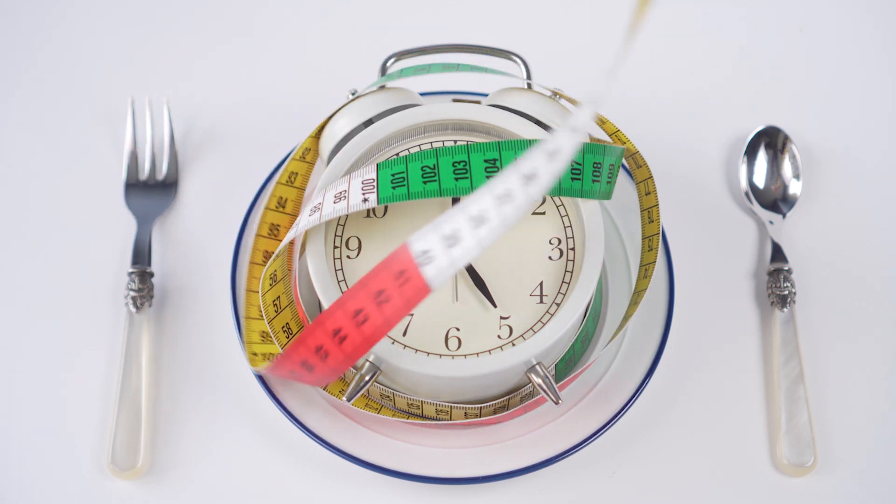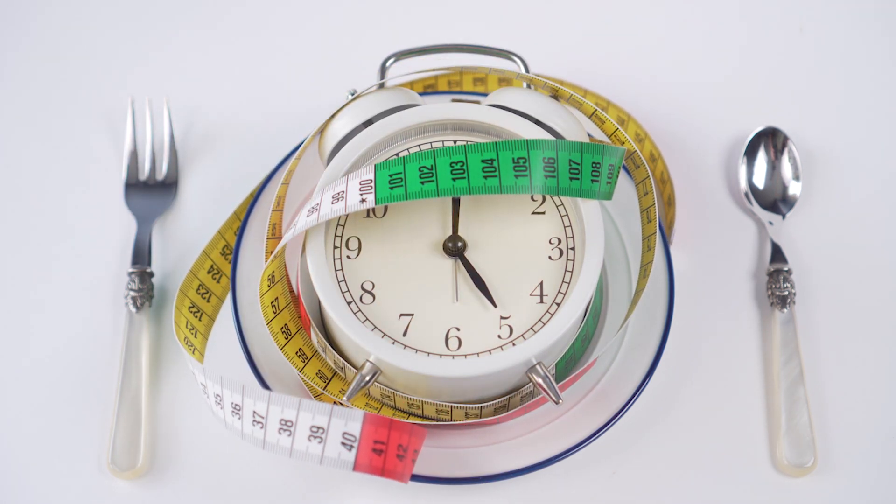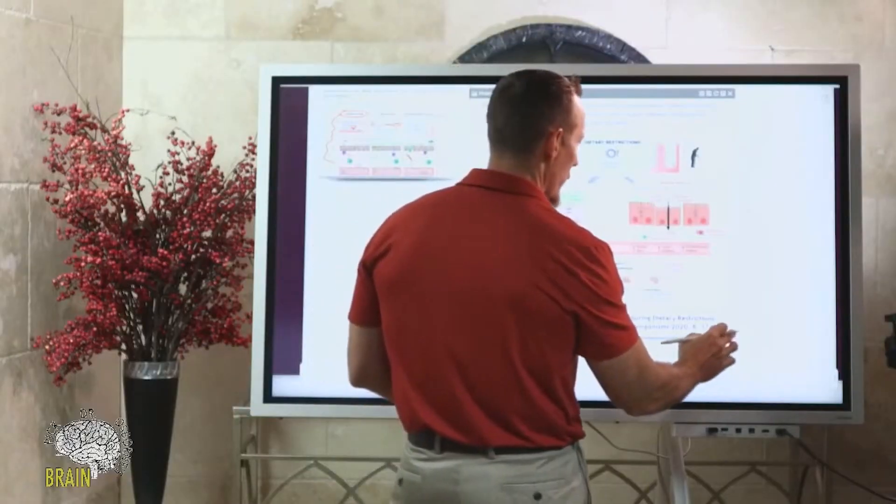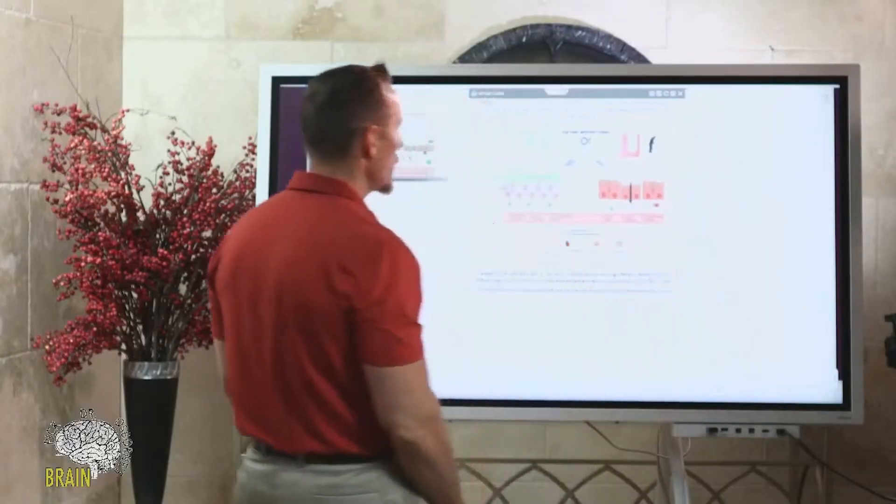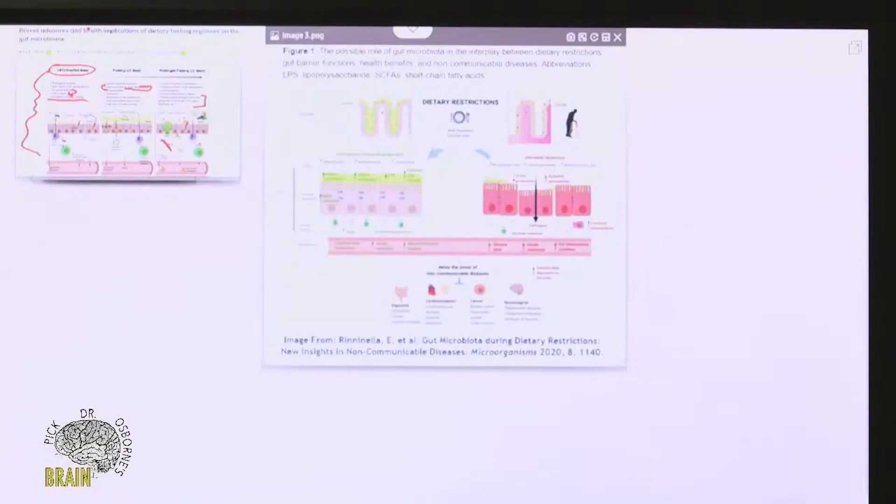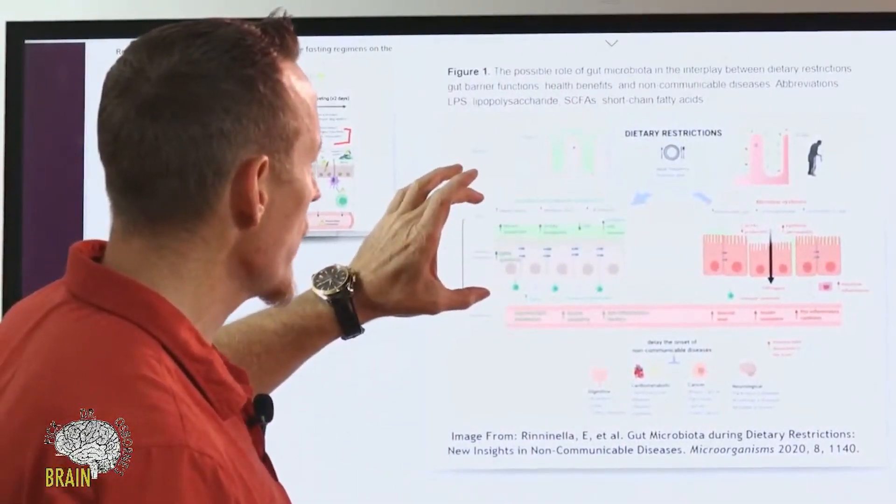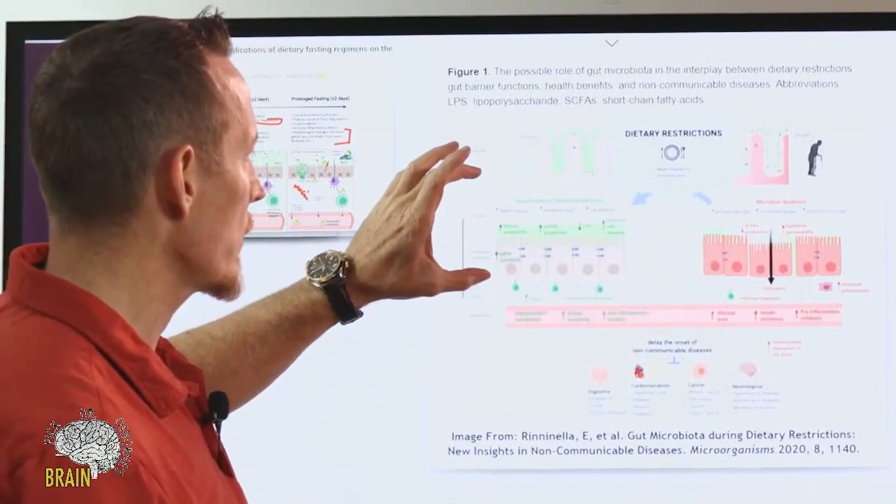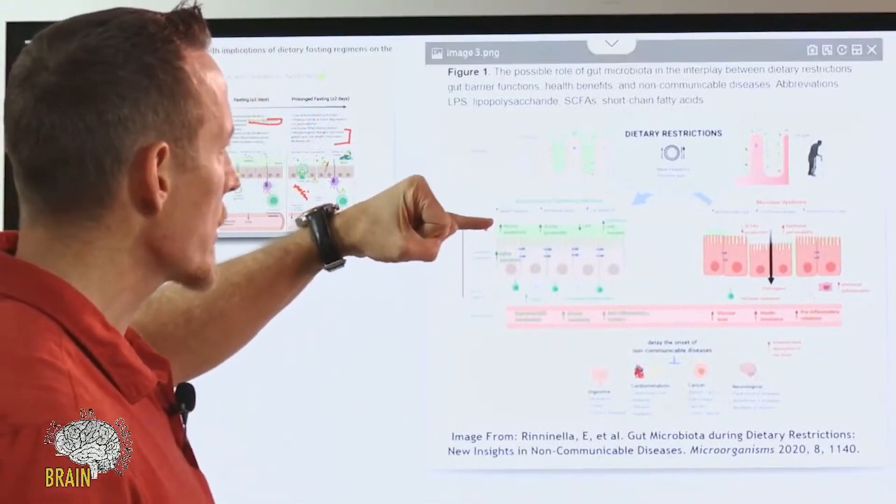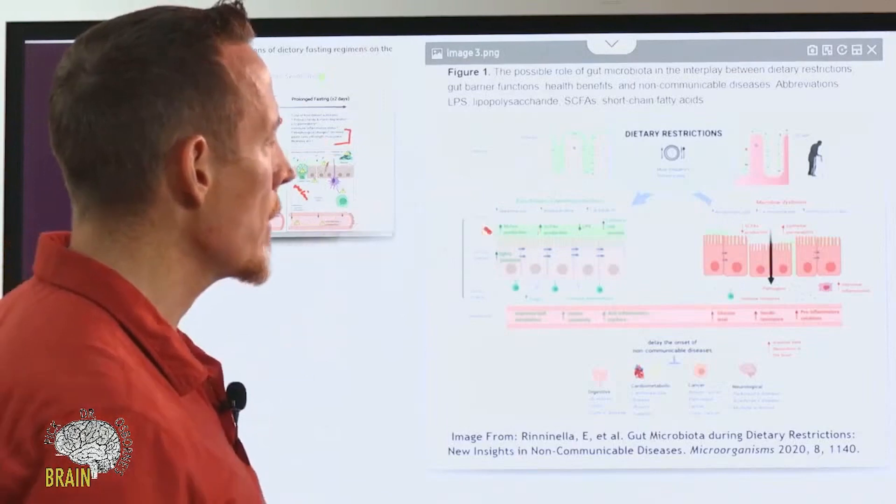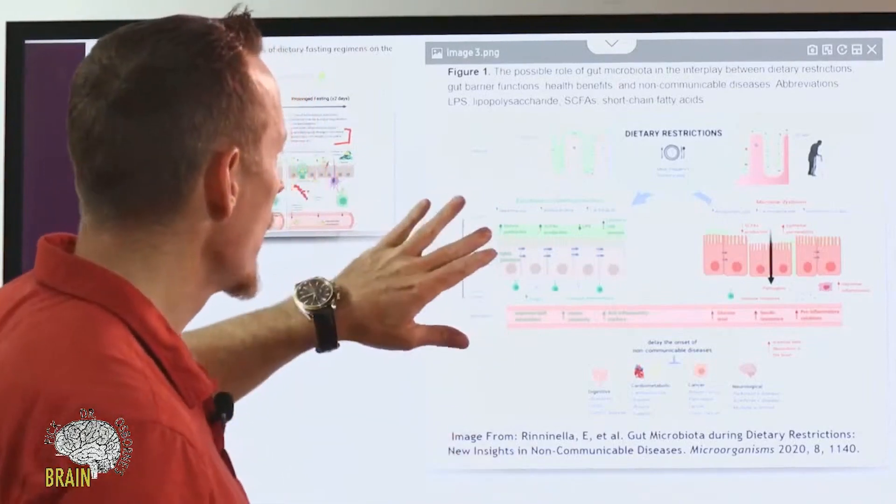Last research diagram we'll pull up here is a diagram on the possible role of gut microbiota and the interplay between diet restriction, gut barrier function, health benefits, and non-communicable diseases. What you've got here is dietary restriction in terms of meal frequency as well as meal size. What we know is if you reduce the size of the meal and reduce the frequency of eating—in essence, if you're intermittent fasting—you have increased mucus production, increased production of a compound called short chain fatty acids.